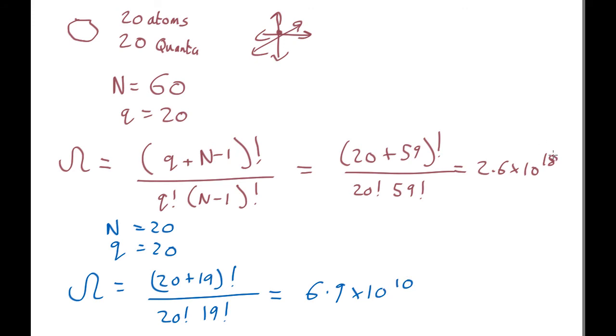So, we've got 10 to the 18 possible states up there, 10 to the 10 down there. So, roughly speaking, it's a 1 in 10 to the 8 chance that at a given moment everything will be oscillating purely vertically. So, it ain't going to happen.